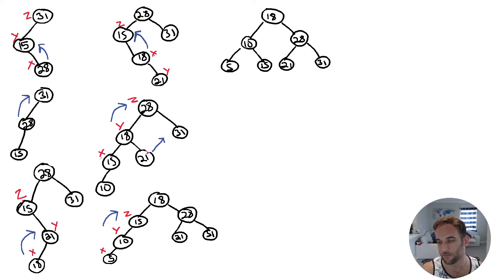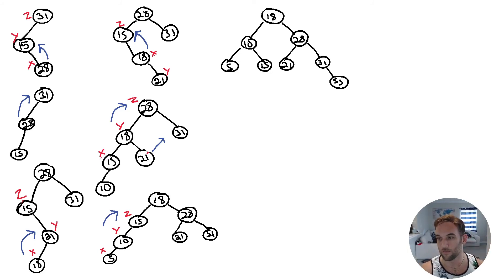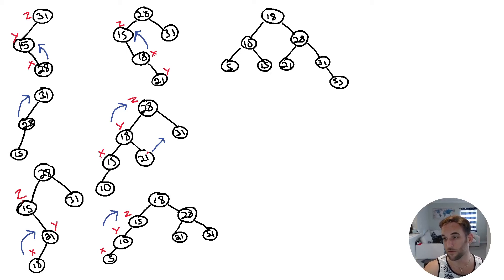Let's insert 55. It's greater than everything, so it becomes the furthest right child — greater than 18, 28, 31 — so 55 is the right child of 31. Going back up: 31 has left subtree 0, right subtree height 1, so 0 minus 1 is negative 1 — balanced. At 28: left subtree height 1, right subtree height 2, so 1 minus 2 is negative 1 — balanced. At 18: left subtree height 2, right subtree height 3, so 2 minus 3 is negative 1 — still balanced.